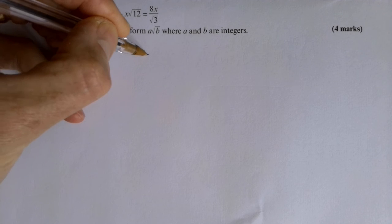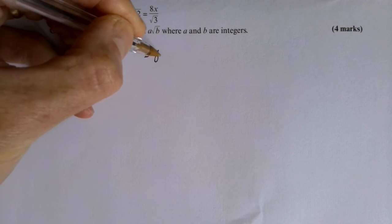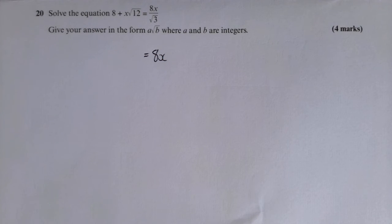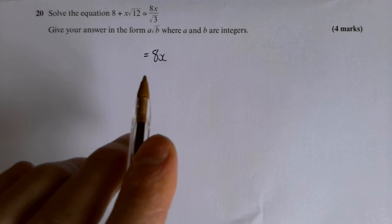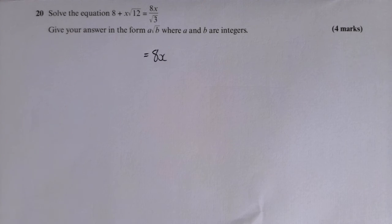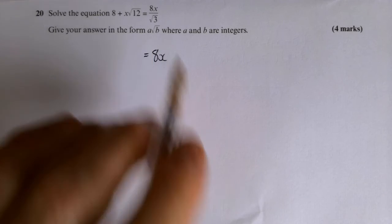So I can get rid of that fraction if I multiply it by root three. If I multiply it by root three, I get just 8x. That kills the fraction. I'm not talking about rationalising it. I'm talking about where you multiply the top and the bottom by root three. Here I'm just multiplying it by root three.